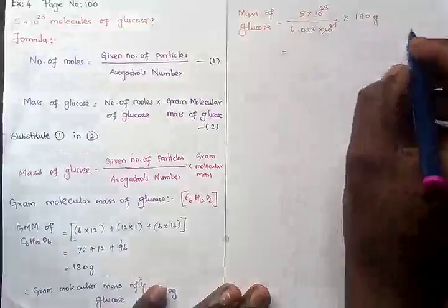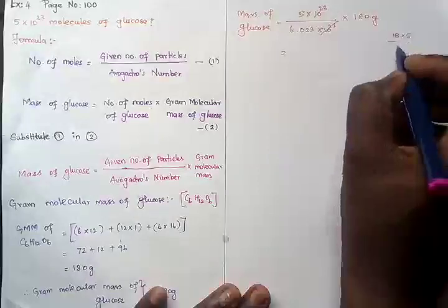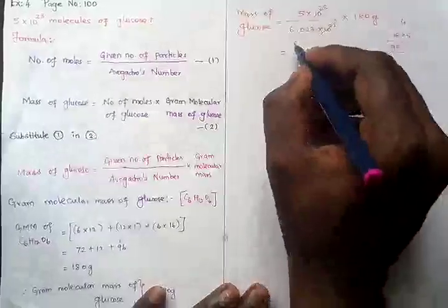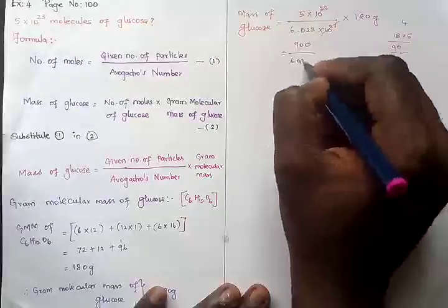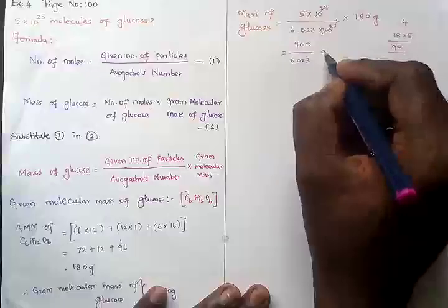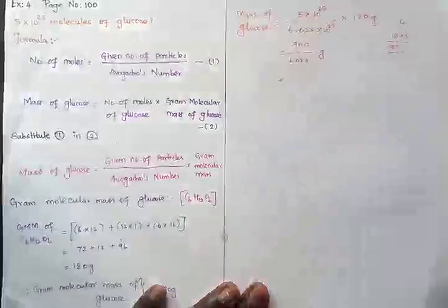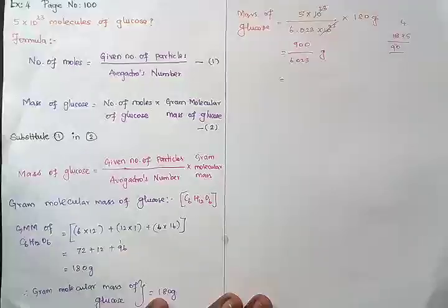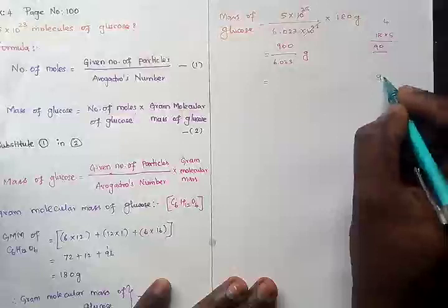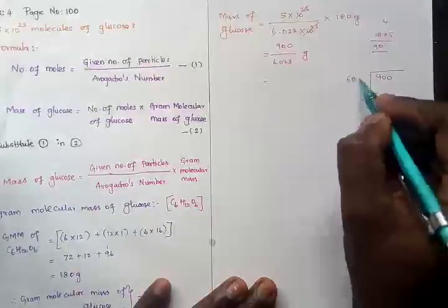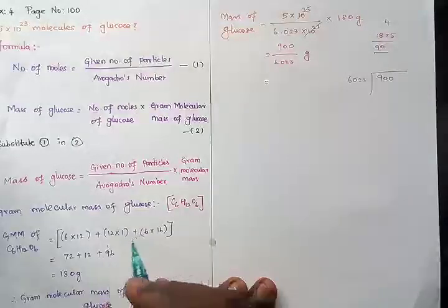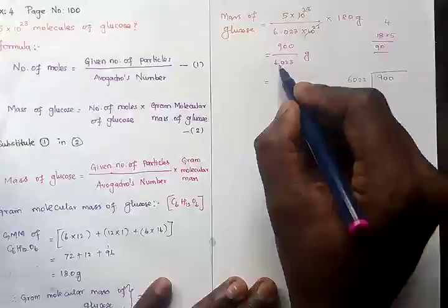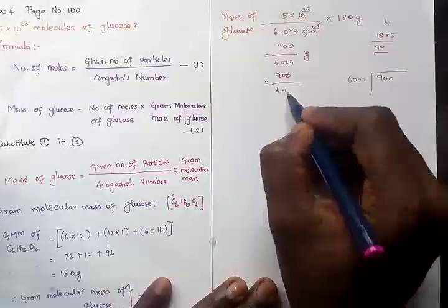Now we calculate 5 × 180: 5 × 18 = 90, so 5 × 180 = 900. So we have 900 divided by 6.023 grams. To simplify the division, we can multiply numerator and denominator by 1000, giving us 900,000 divided by 6023.